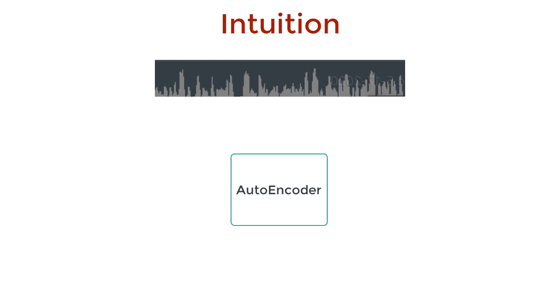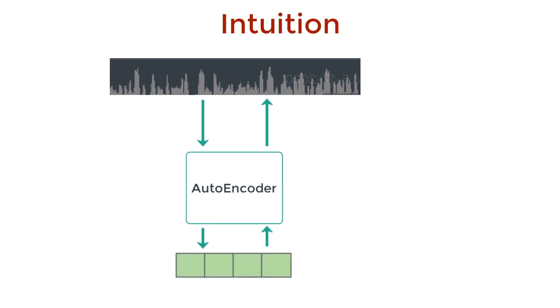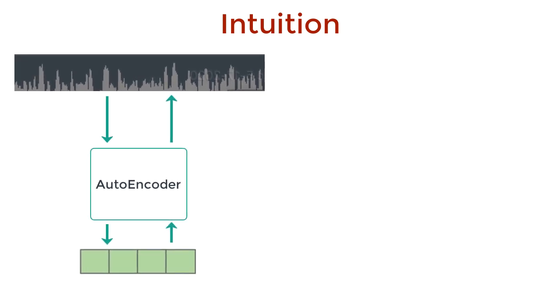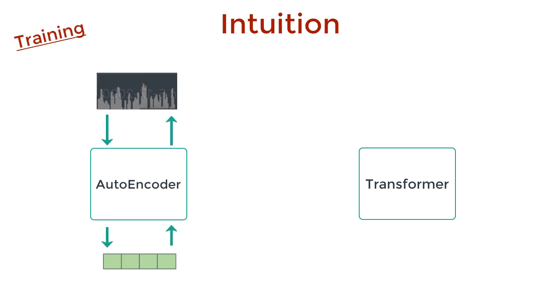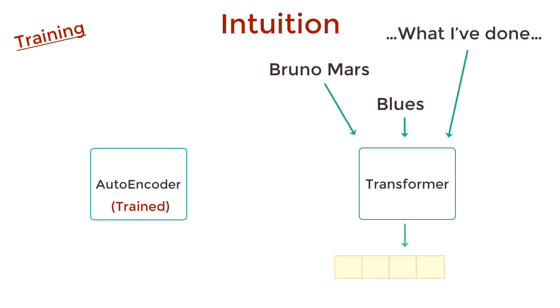This autoencoder network can take in a raw waveform and learn to compress it. And it can also learn to take a compressed audio and learn to decompress it back to the original waveform. The jukebox uses the autoencoder and transformer together. And we build this jukebox in two phases, training and generation. During the training phase, we train the autoencoder to compress and decompress audio. And then we train the transformer to take in some information about the song to generate and train it to generate a compressed vector representation of the song, one chunk at a time.